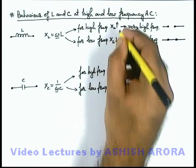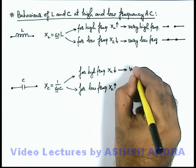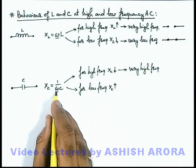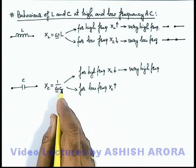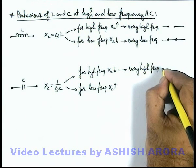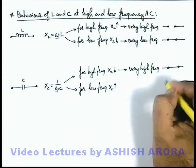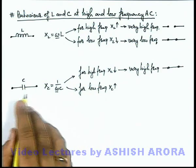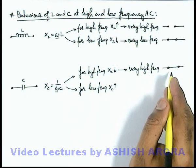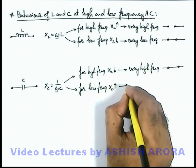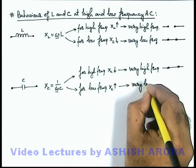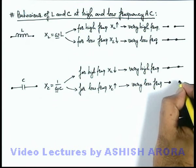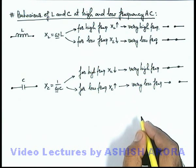In the same manner as we studied for an inductor: at very high frequency, if omega is very high, the value of X-C will tend to zero or be negligible. We can say this capacitor behaves like almost a short circuit. For very high alternating current, the ohmic opposition of a capacitor is negligible.